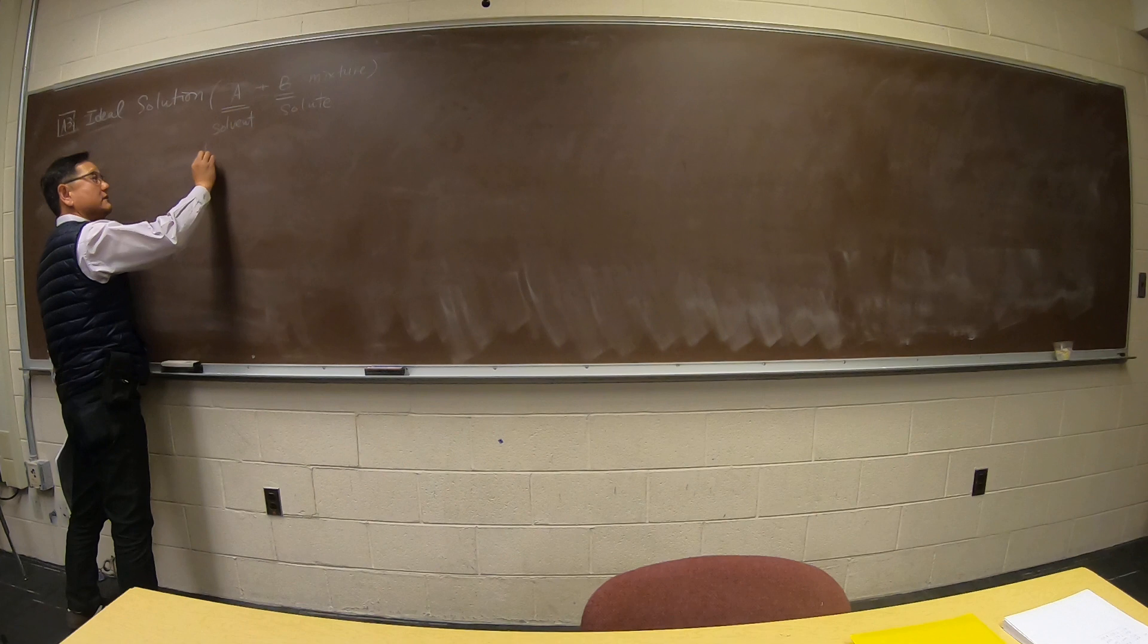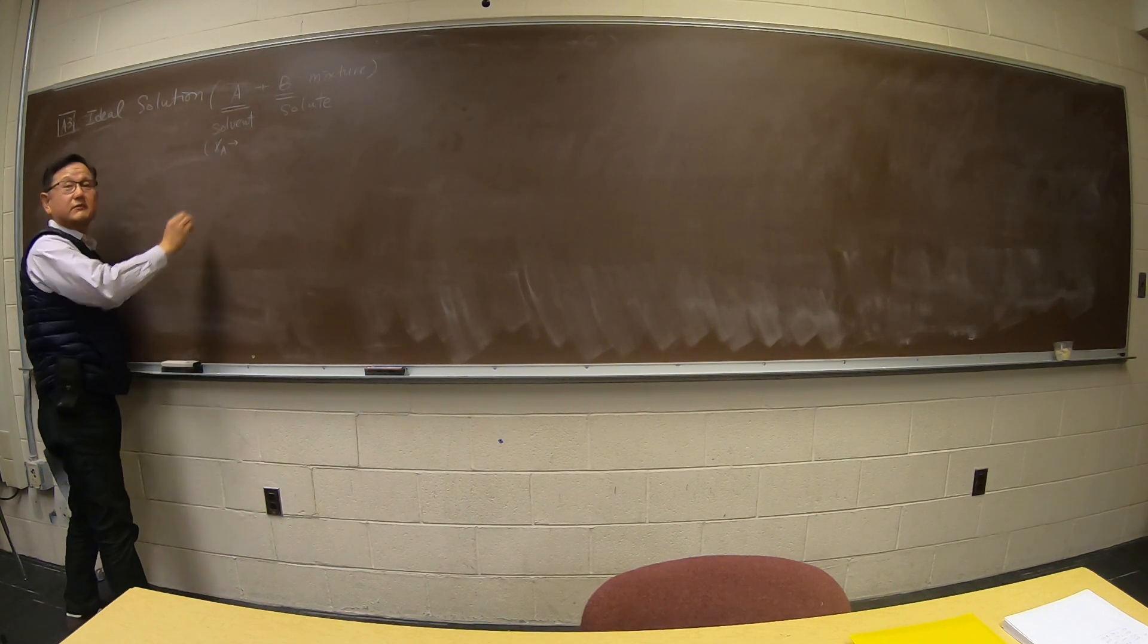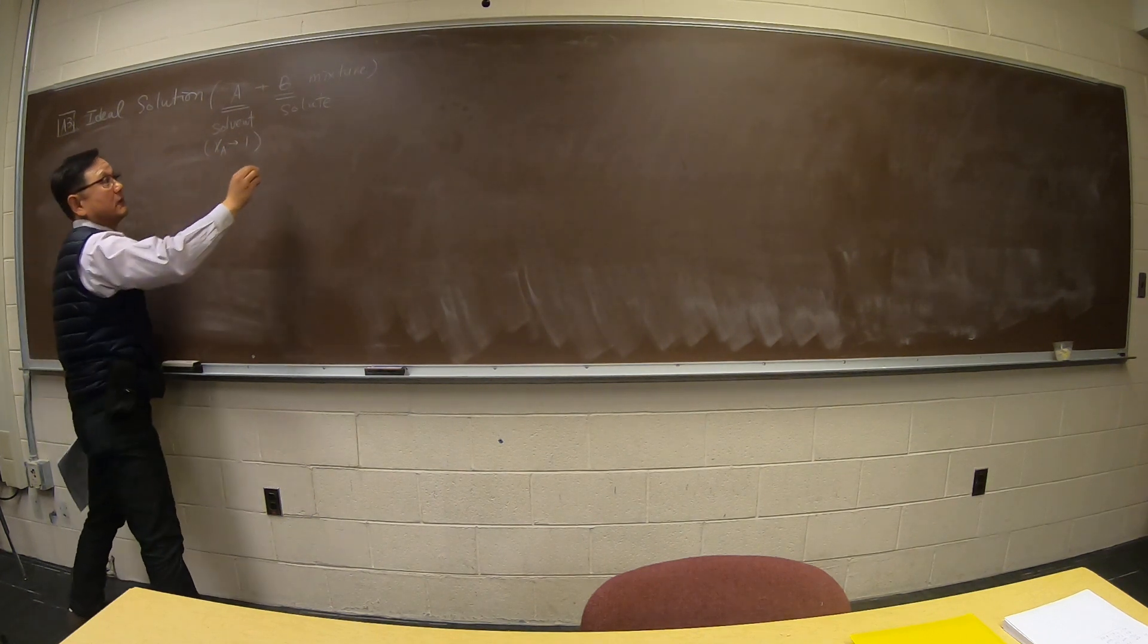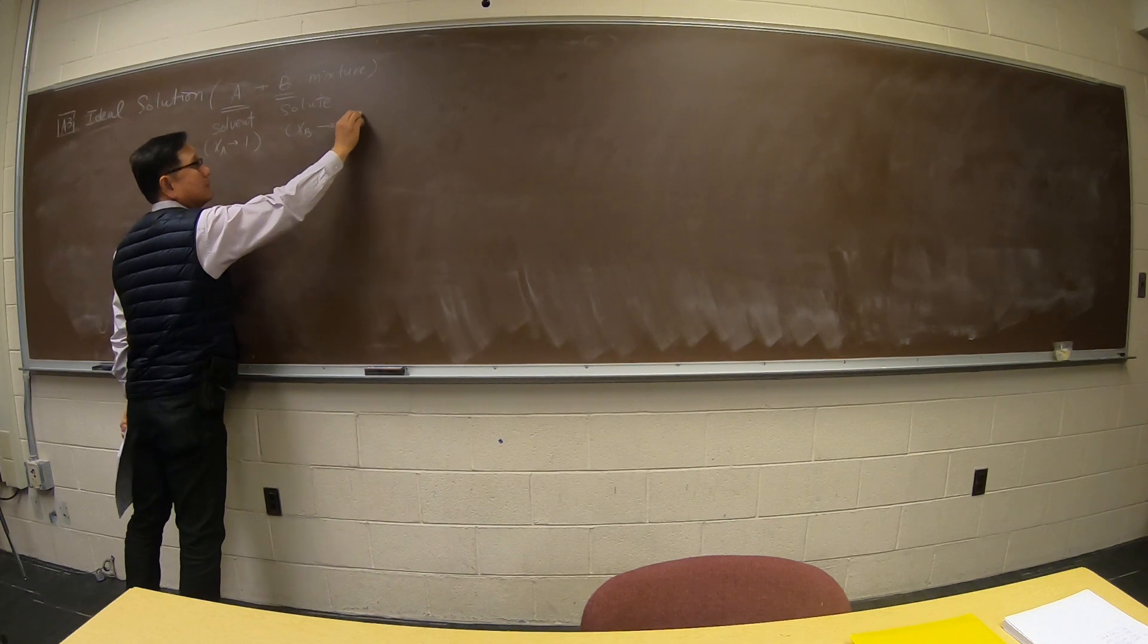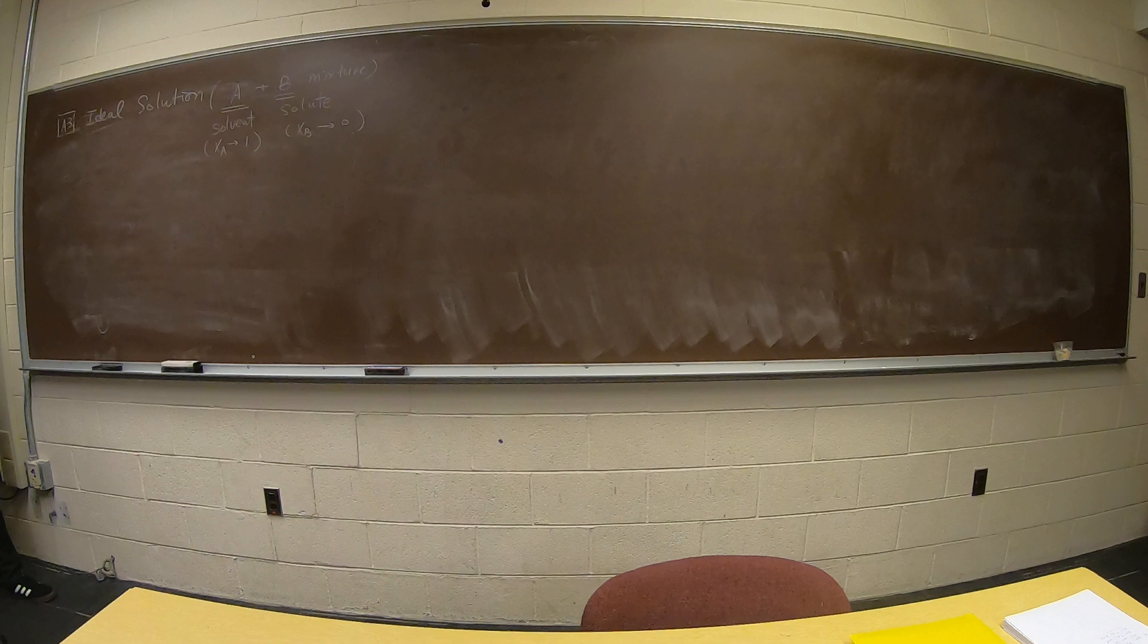By definition, the mole fraction of A is in the limit of one, close to one, whereas XB is close to zero. So this is the setup that we have.